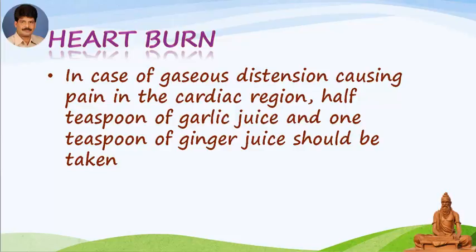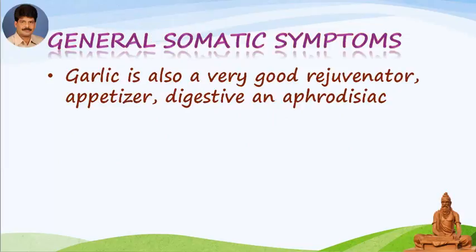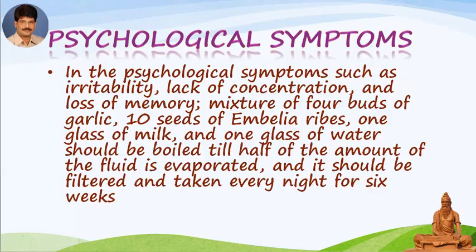For heartburn, in case of gaseous distension causing pain in the cardiac region, half a teaspoon of garlic juice and one teaspoon of ginger juice should be taken. For overweight, the same remedy taken for a month reduces weight. Garlic is also a very good rejuvenator, appetizer, digestive, and aphrodisiac.